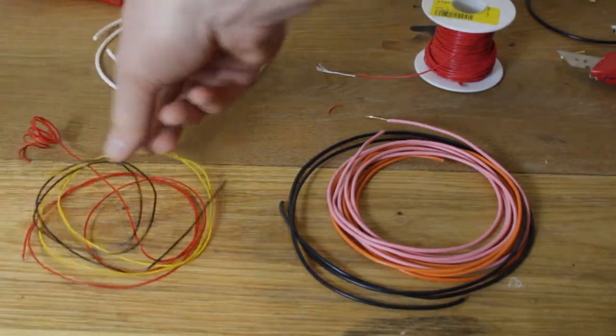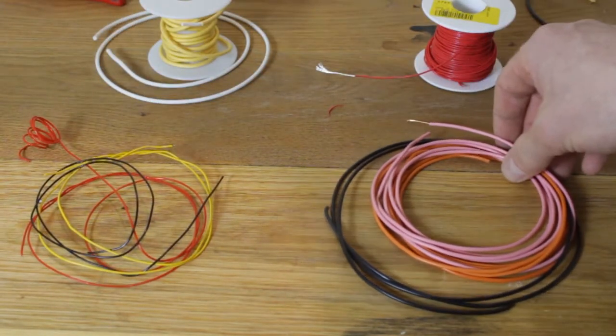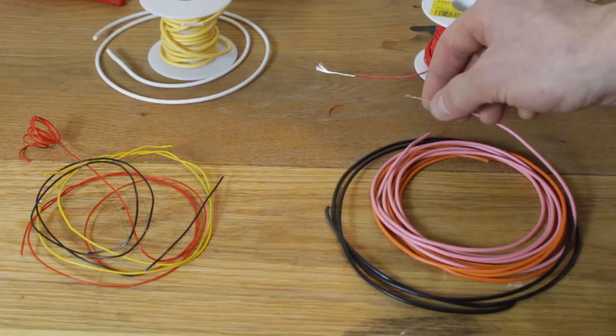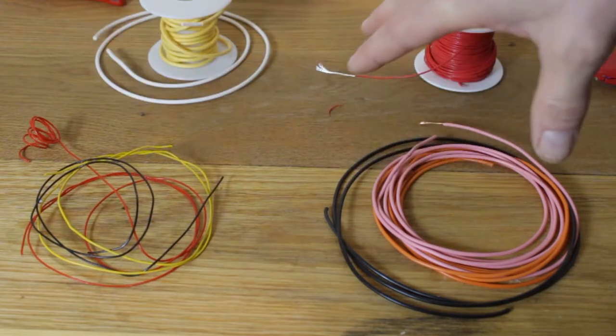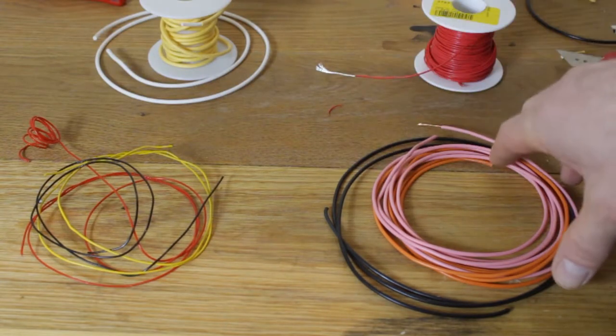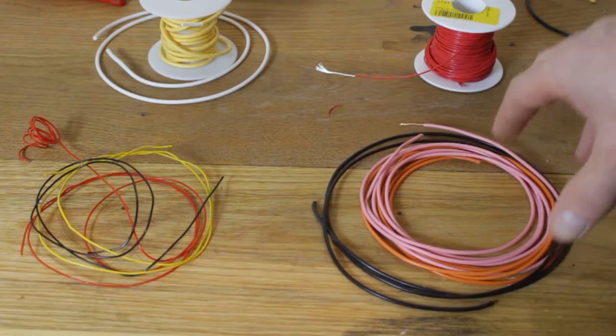The next thing to consider is what gauge of wire do I need, and when we talk about gauge it's really about the current carrying capacity of the wire. Now most high voltage circuits inside an amplifier don't need anything more than an amp of current capacity, so all of these wires are suitable for high voltage current capacity.